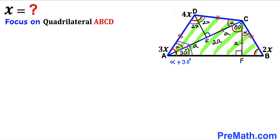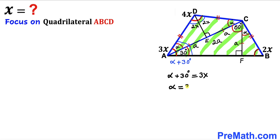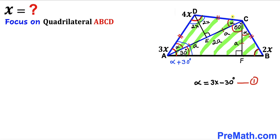This same angle DAB is also given as 3x. So we can write: alpha + 30° = 3x, which gives us alpha = 3x − 30°. We label this as equation number one.